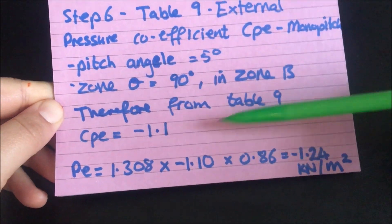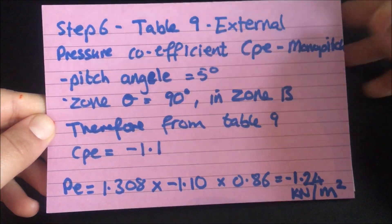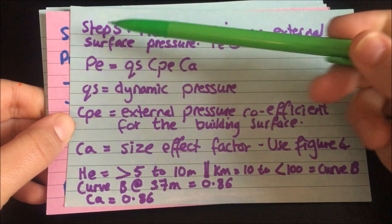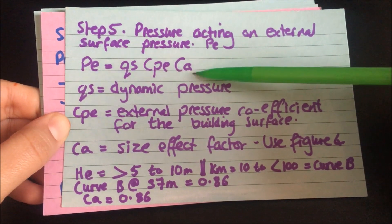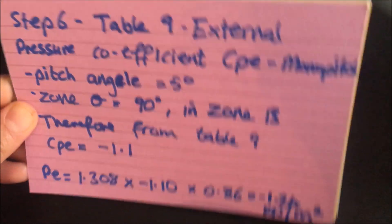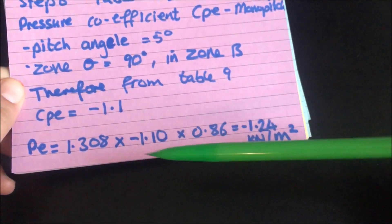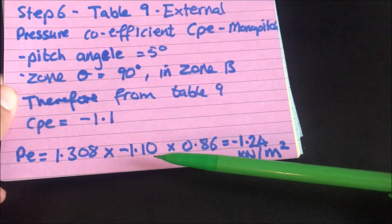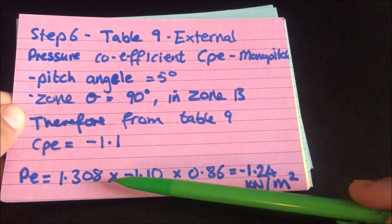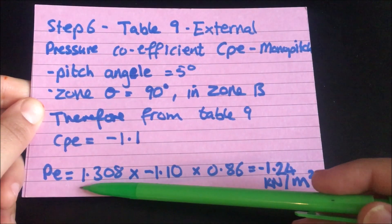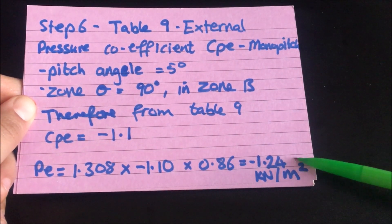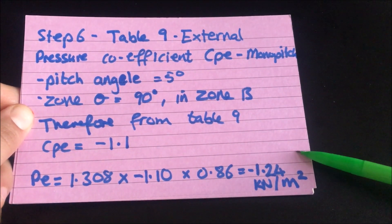Now that we have our CPE value, our QS value, and our CA value, we can put all these values into the external surface pressure formula: PE equals QS times CPE times CA. That gives us an external surface pressure of negative 1.24 kilonewtons per meter squared.